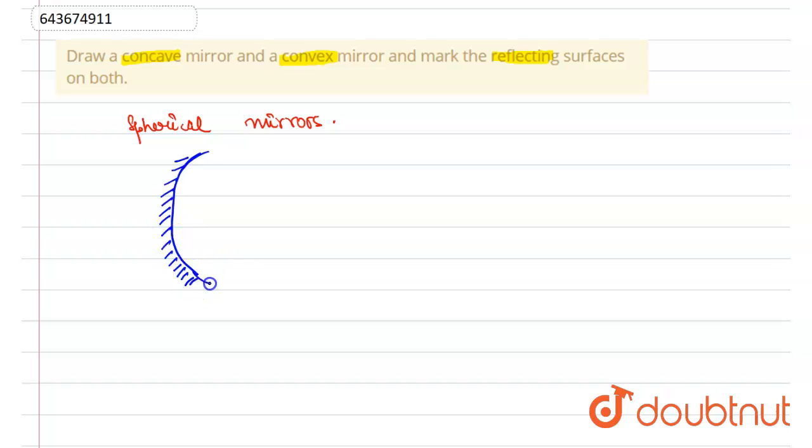So this is the concave mirror. This on the right-hand side that we can see, this portion becomes the reflecting surface. This becomes the reflecting surface because this is the shiny portion.